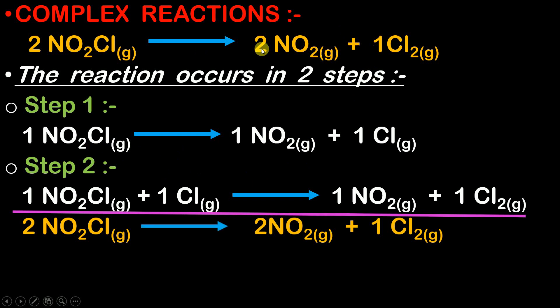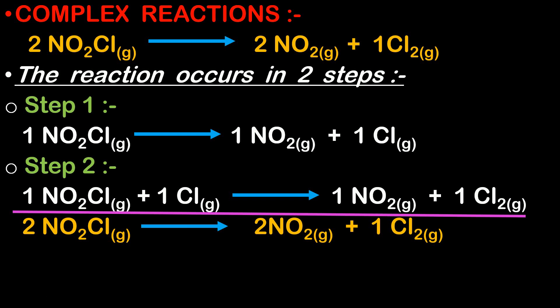This reaction occurs in more than one step — as you can see, there are two steps involved. Any reaction that involves more than one step is called a complex reaction.